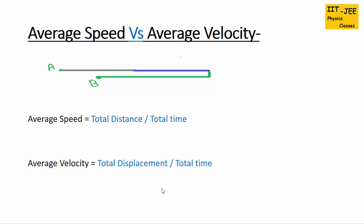Next is average speed versus average velocity. We calculate average speed in cases where an entire trip is traveled with different velocities. Suppose a person travels from A to P with velocity V1, then to Q with V2, and then turns back to B with V3. To find average speed, use the formula: total distance over total time. Do not find the average of all the velocities — that is wrong. You must first find the total distance of the entire trip and divide by total time.